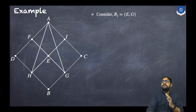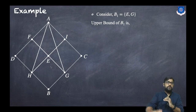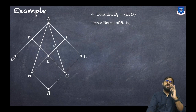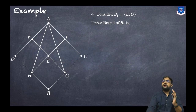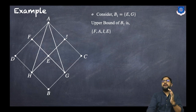Now consider the second Hasse diagram example with set {E, G}. For upper bounds, there must be a relation from the set to upper points. The potential upper points are F, A, I, and C. Can we go from E and G to F? Yes. To A? Yes. To I? Yes — for G, go G to E then E to I. Can we go from E to C? No, so C cannot be an upper bound. Considering set elements: can we go from G to E and E to E? Yes. So the upper bounds are E, F, A, and I.